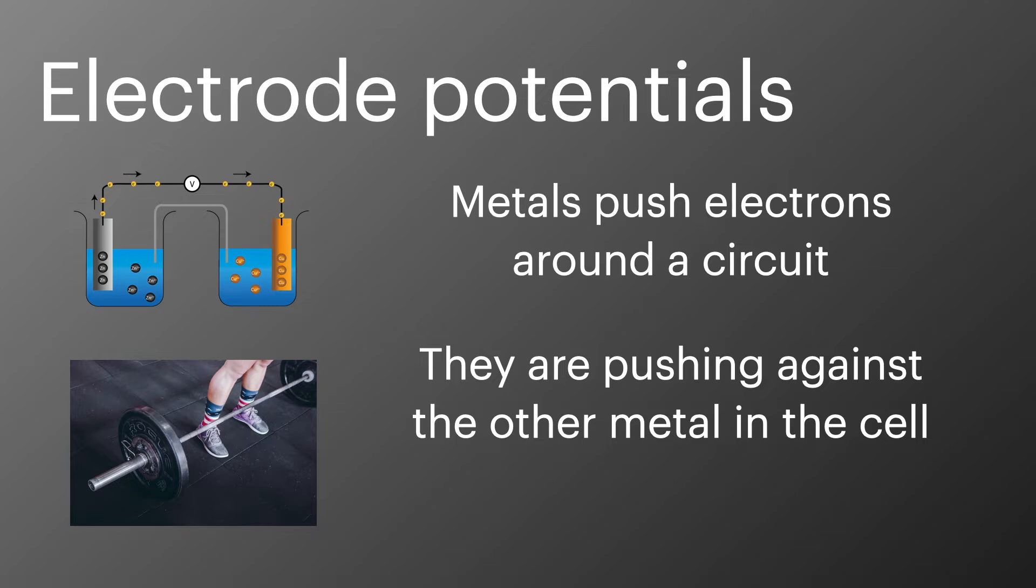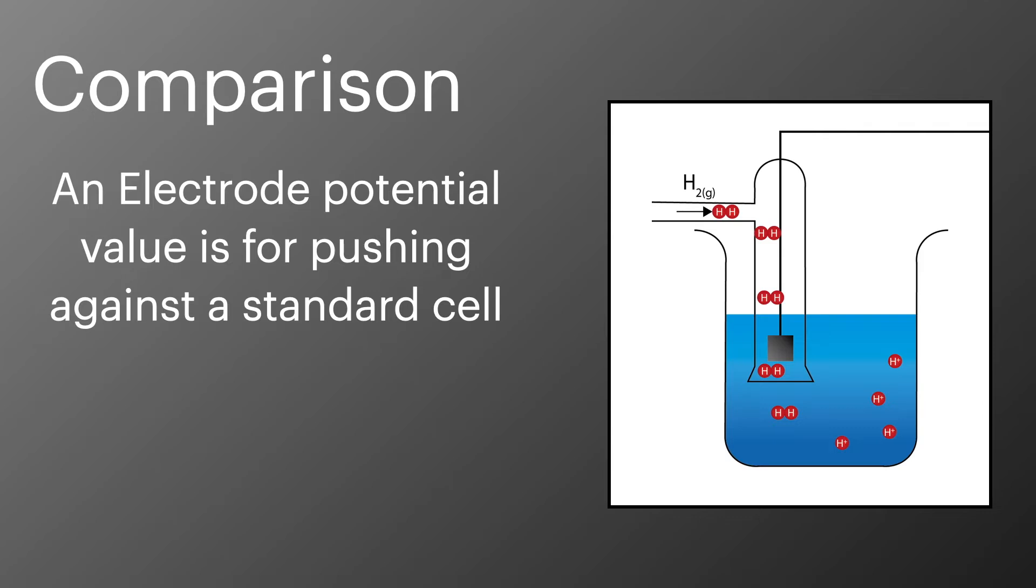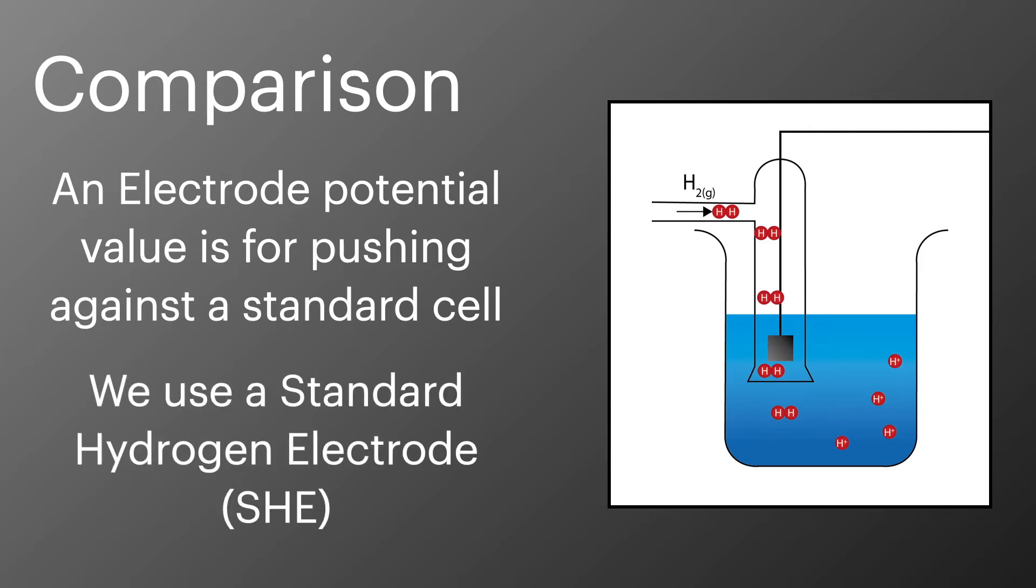What we really want to be able to do is compare these against a neutral or a set standard. So for an electropotential, we have our half cell pushing against a standard electrode. For this, we use a standard hydrogen electrode.